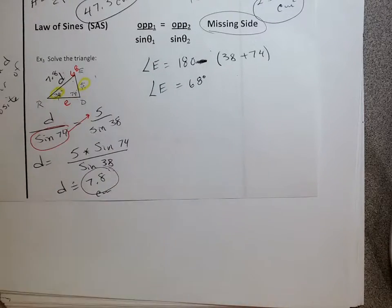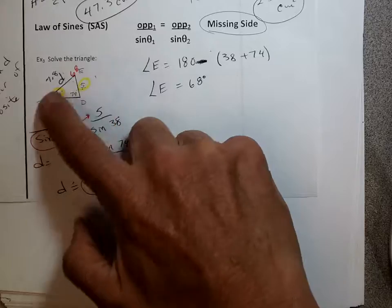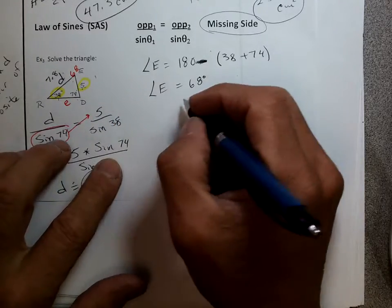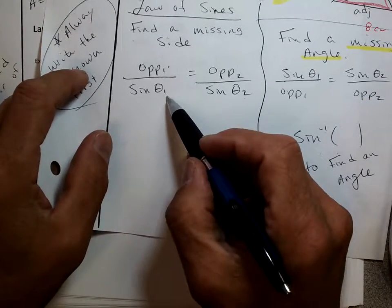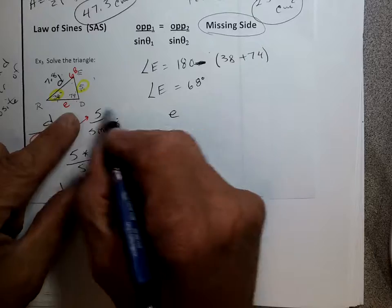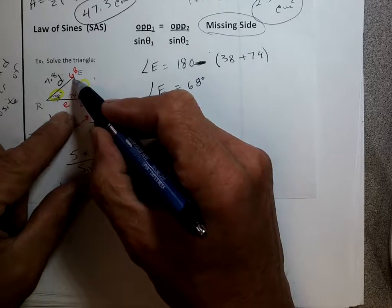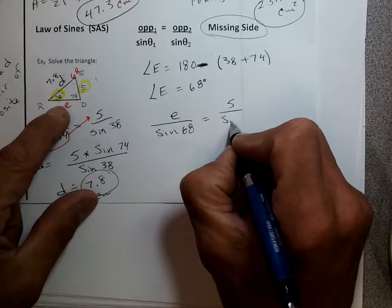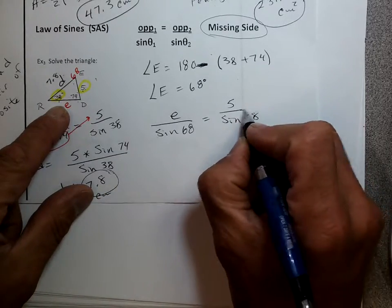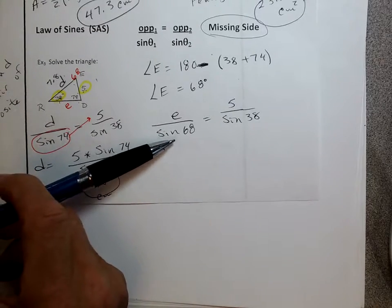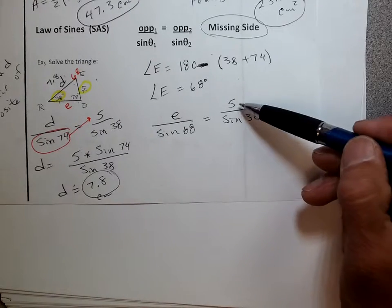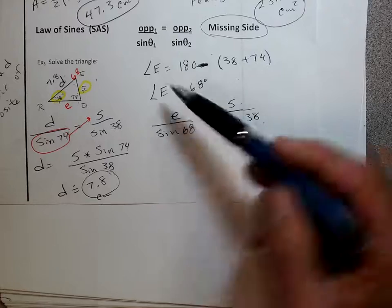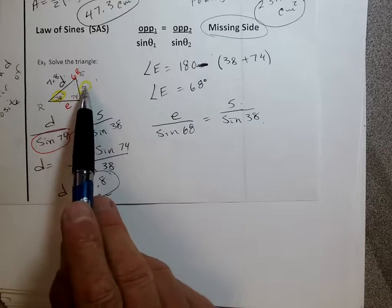Now, the last thing I can do is find little e. Again, I've got opposites — I can go to my opposites. So if I want to find the side, I'm going to go: opposite one over the sine of its angle equals opposite two over the sine of its angle. Always write the unknown first. So: little e over the sine of 68 equals 5 over the sine of 38 — side over the sine of its opposite angle equals side over the sine of its opposite angle.